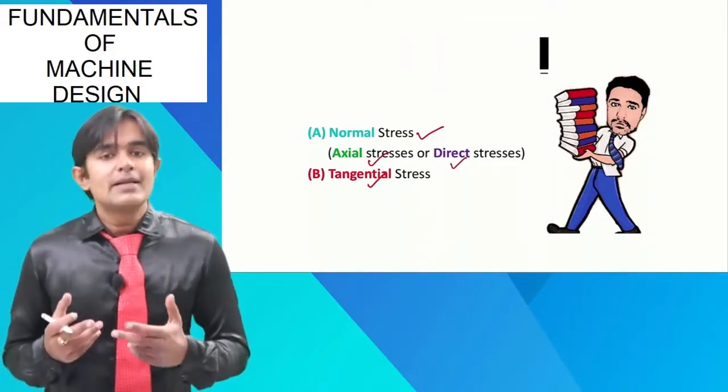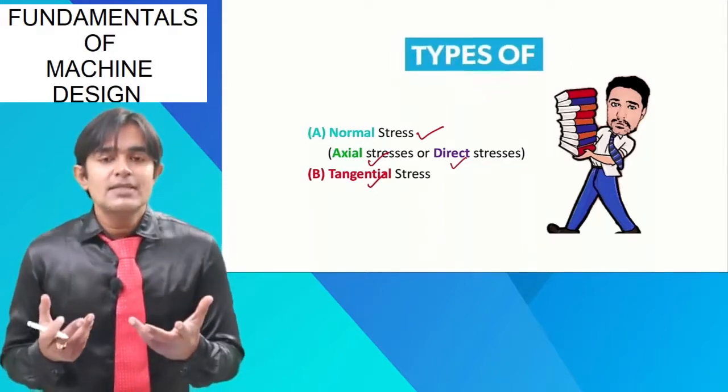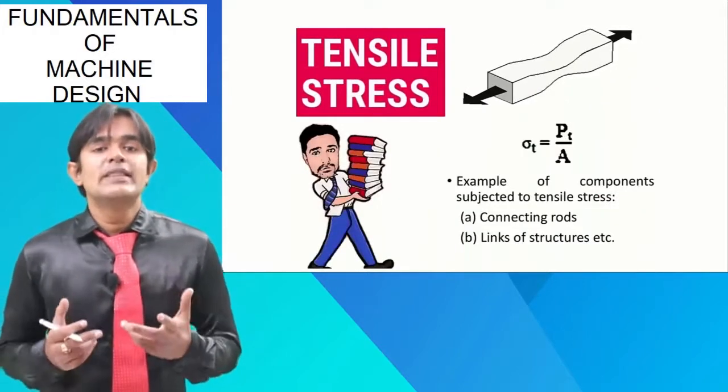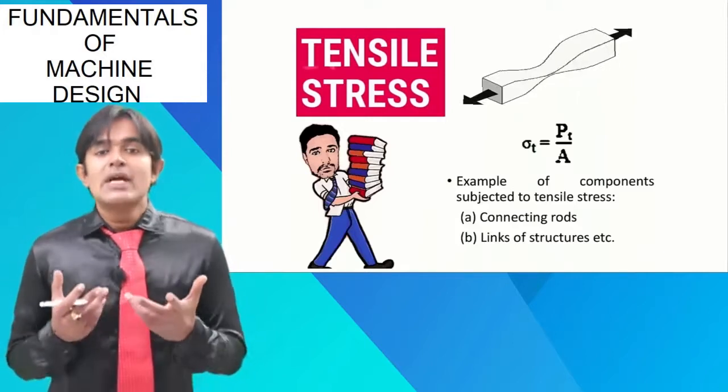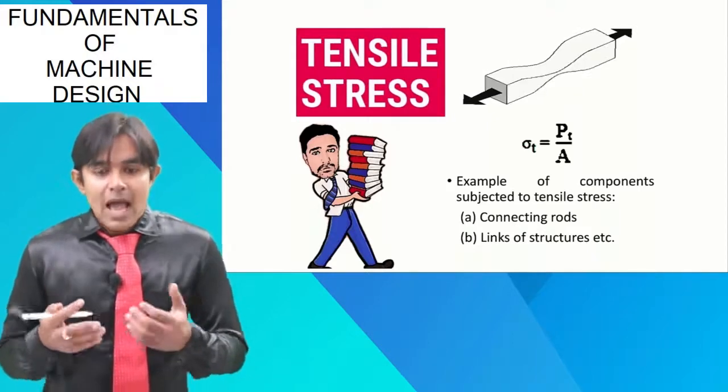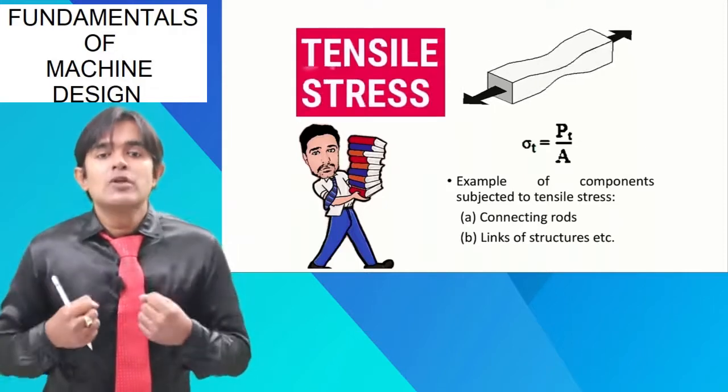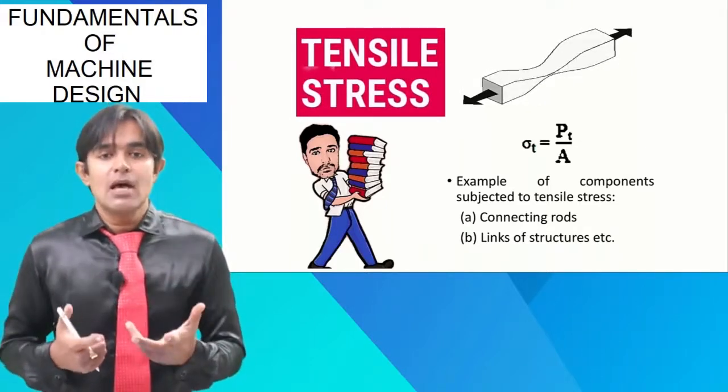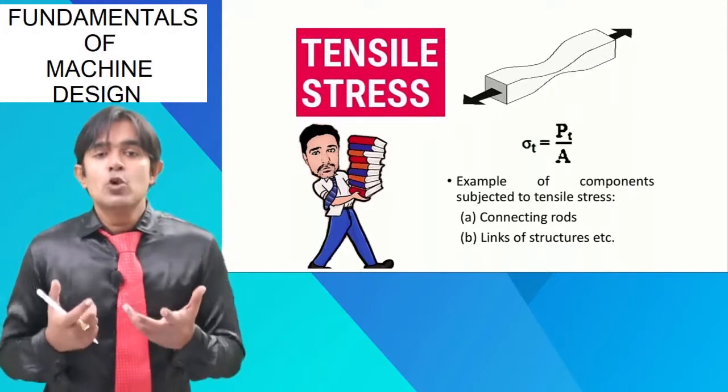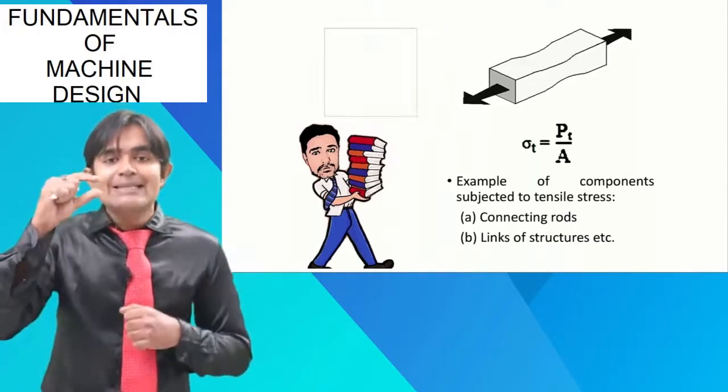Now, let us understand what is normal stress and tangential stress. Let us start first with the tensile stress. You can see in the diagram, there is a rectangular bar on which I am giving the pull force. If two equal and opposite tensile forces are applied on a body, then the body will go through elongation of the length and decrease in the area.